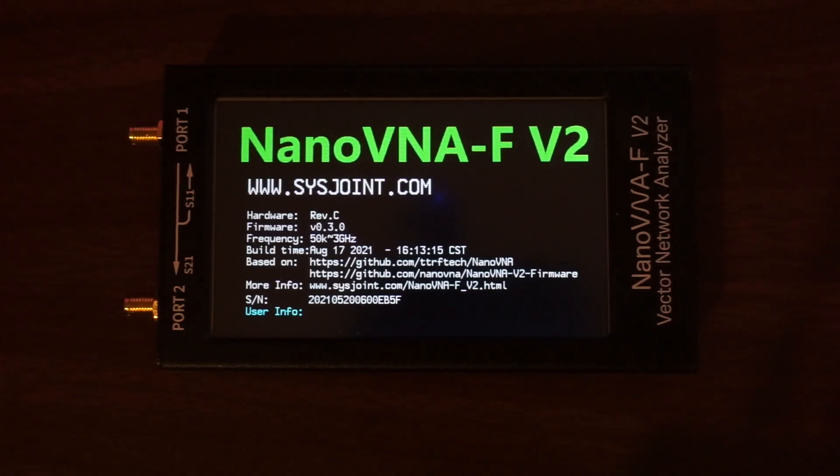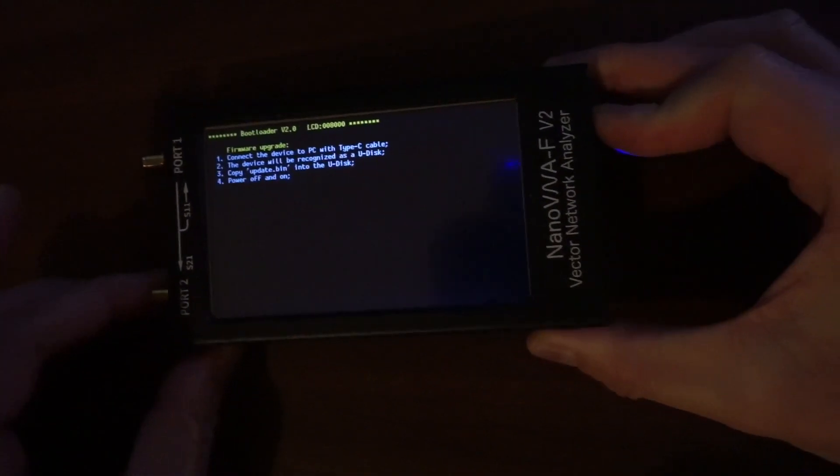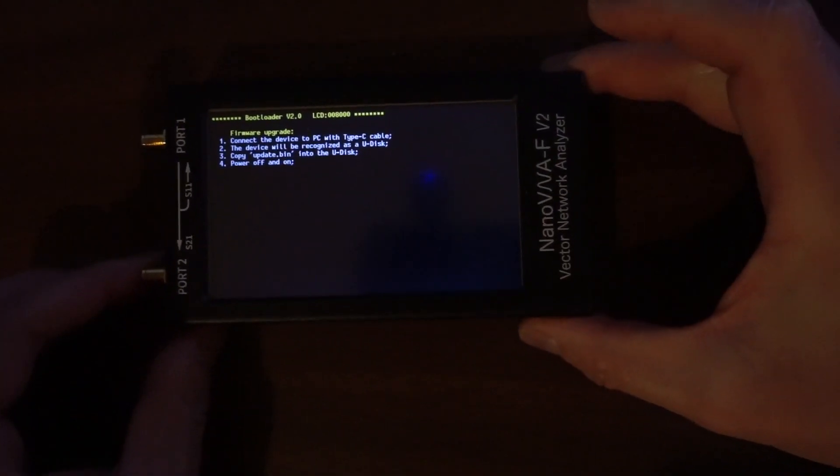Let's upgrade the firmware to the latest. Here is the firmware update procedure for this NanoVNA. If I turn it around, you can see there are three buttons on the side. If I press the middle button and power it on at the same time, the NanoVNA enters bootloader mode, where we can do the firmware upgrade.